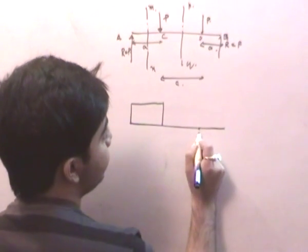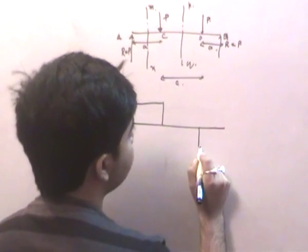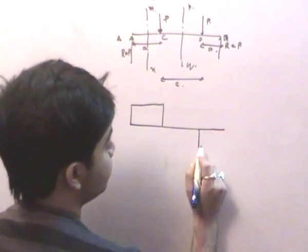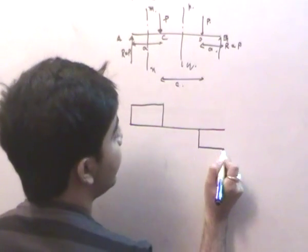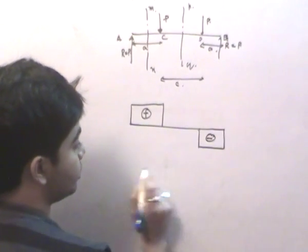At point D again, there is a downward force P acting, so the shear force becomes negative. From D to B, there are no transverse concentrated loads, so it remains constant. This is the positive shear force region, and this is the negative shear force region.